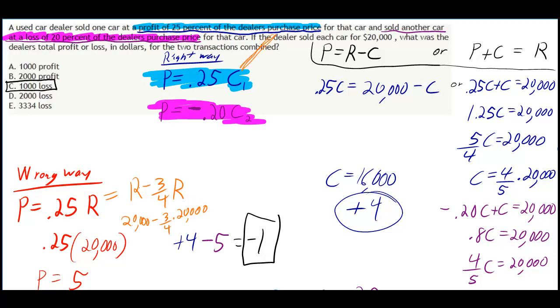Just to show you exactly what you did wrong: you put R minus 3/4R and then plugged in 20,000 for R, which gave you 5,000 total. In fact, you didn't even need R minus 3/4R because that just simplifies to 1/4R.